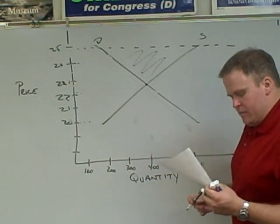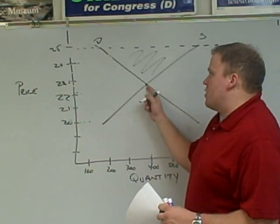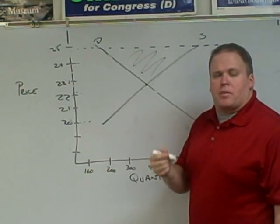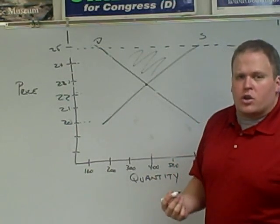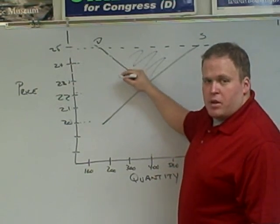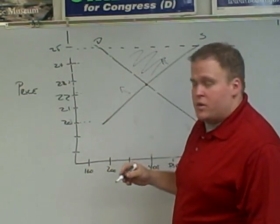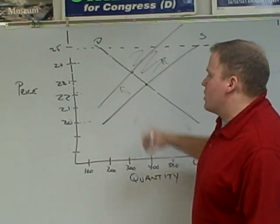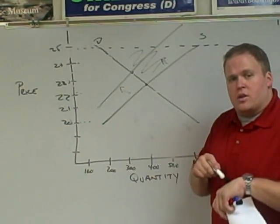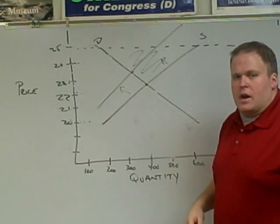Question F: now assume the employees negotiate a pay raise. What's going to happen? Those jeans that cost $22 at equilibrium — or about $25 for now — are going to cost a little bit more, because one of the factors of production, labor, has negotiated a pay raise. So the price of jeans is going to increase. What happens to the supply line? It's going to shift to the left — remember, increase left, decrease right. Our new equilibrium price will be about $23–$24. The equilibrium price went up, and when prices go up, quantity goes down.